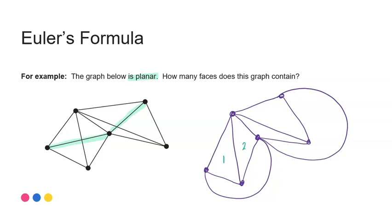So I've got one, two, three, four, five, six, and the outside seven, seven regions or seven faces for this particular graph.